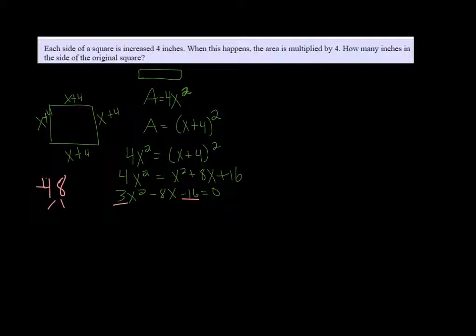So start, you know, start low. 2 and 24, 3 and 16, and just work your way up. 4 and 12. Oh, that's going to be our pair, right? Because I can do 4 minus 12 will give me negative 8.